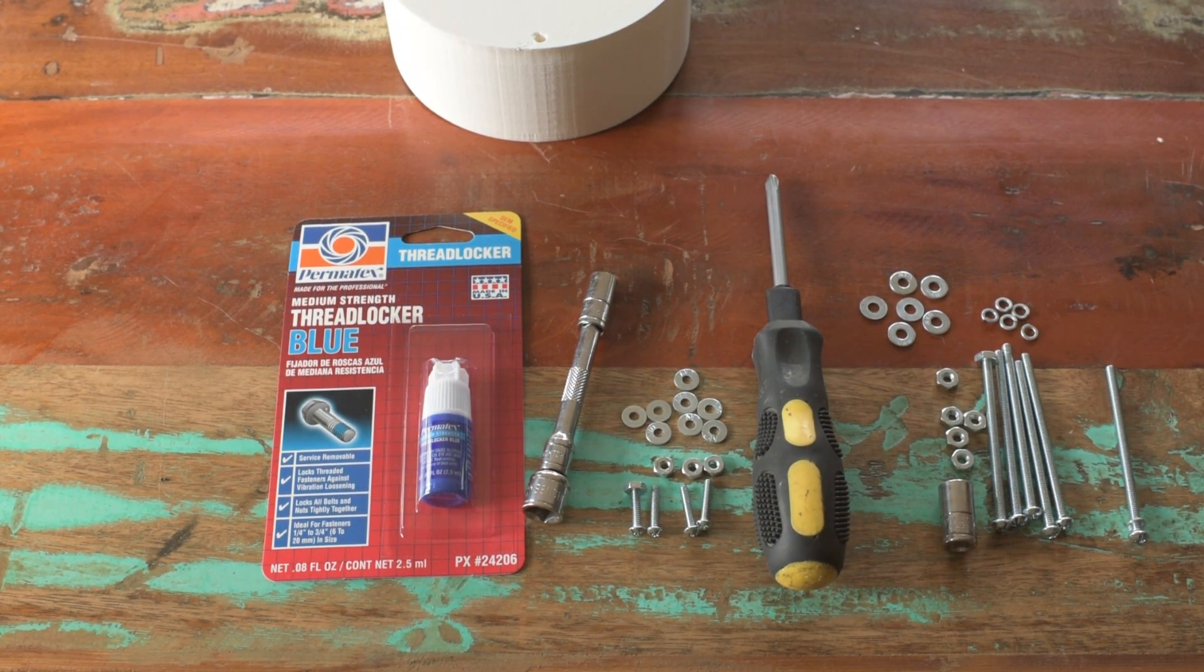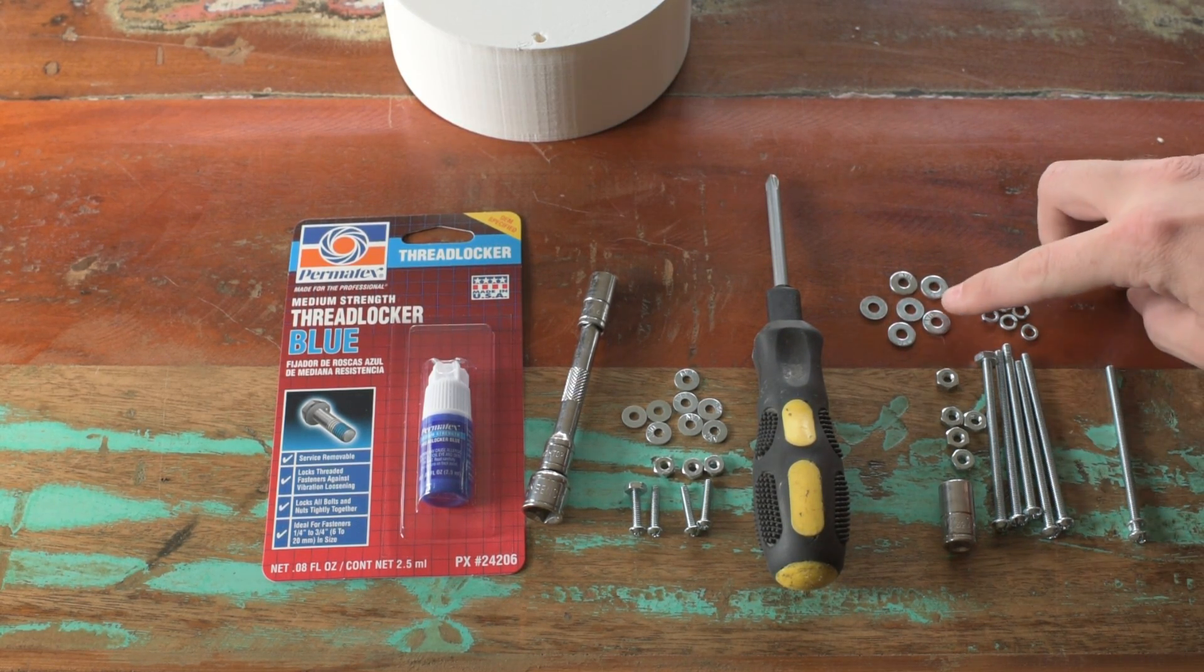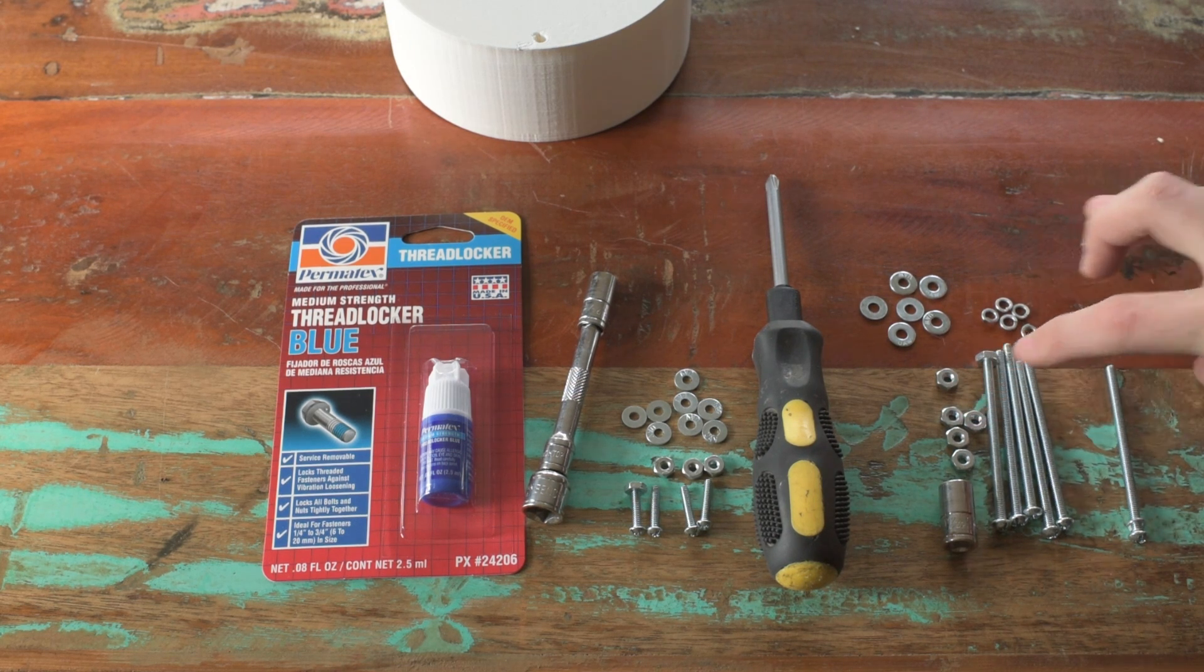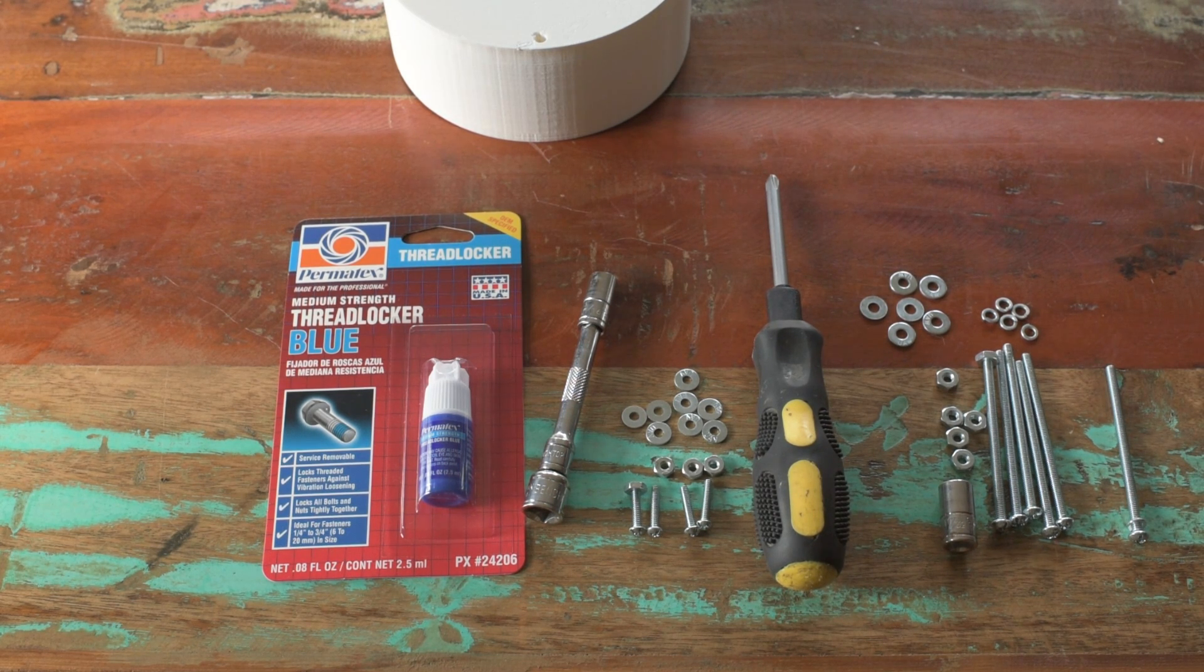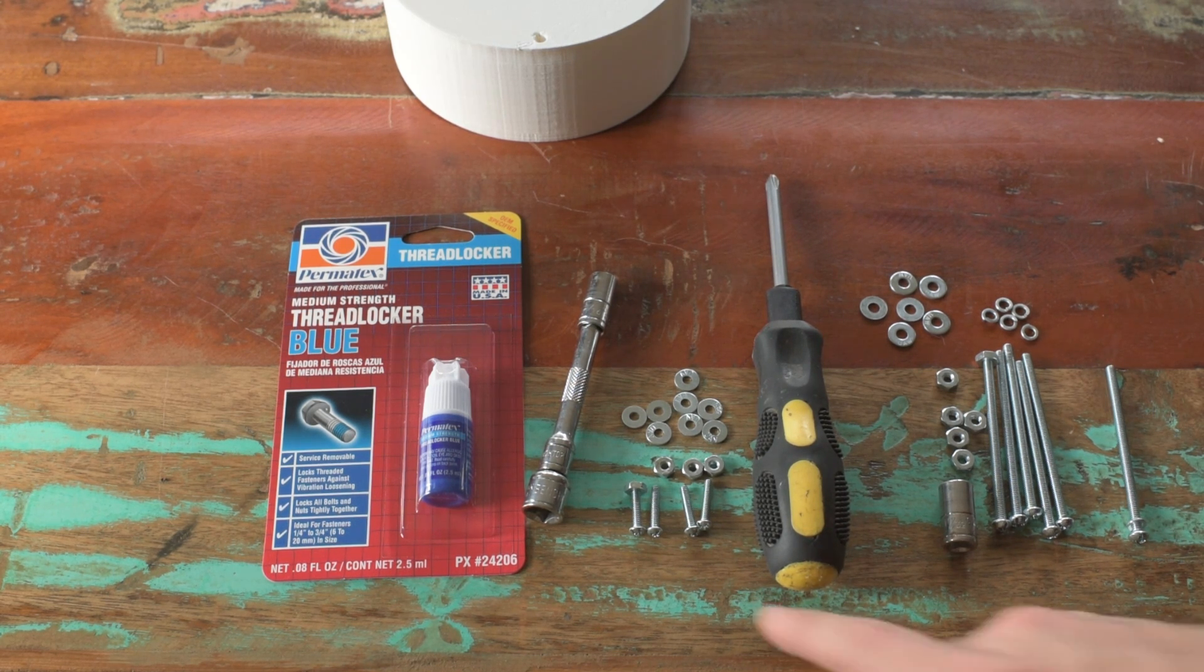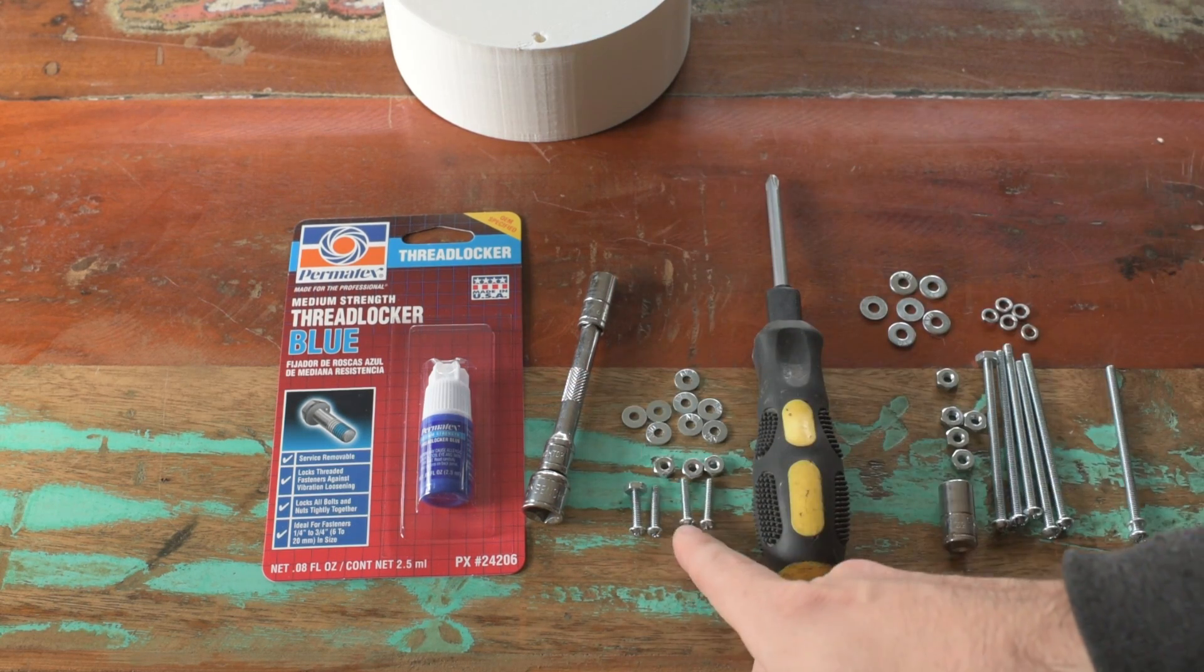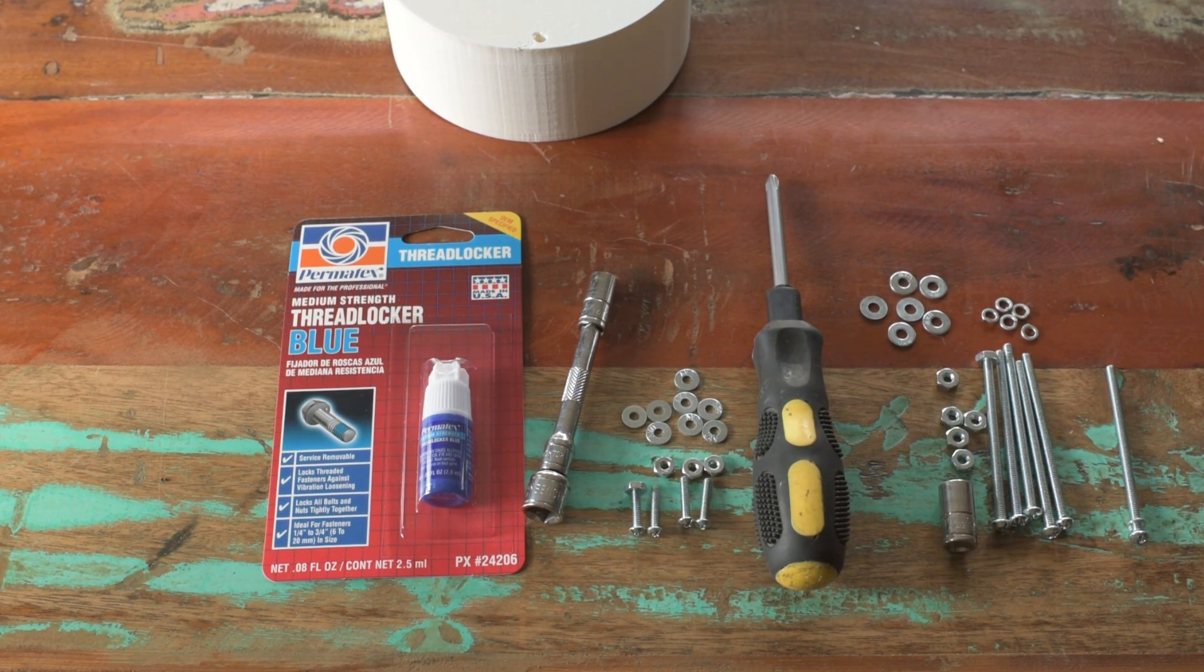So real briefly, the six quantity hardware, those are 8-32 by three inch screws. I've got six of those. I've got six number eight lock washers. I've got six number eight washers. I've got six 8-32 nuts. So that's it for the outer screw set. And then for the fours that mount the actual motor to the housing, there are 6-32 by three quarter inch machine screws. I've got four of these, eight washers, and four 6-32 nuts.